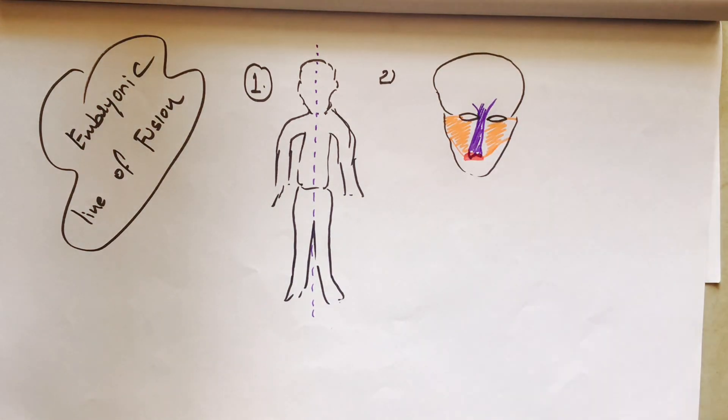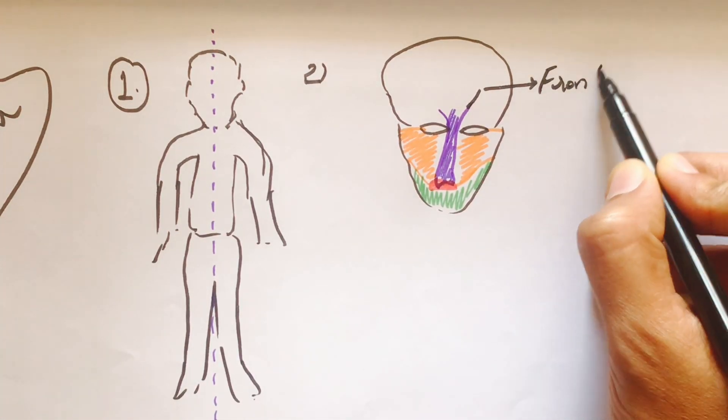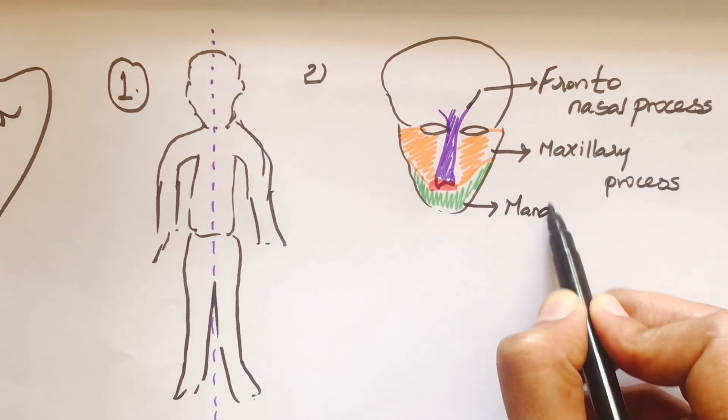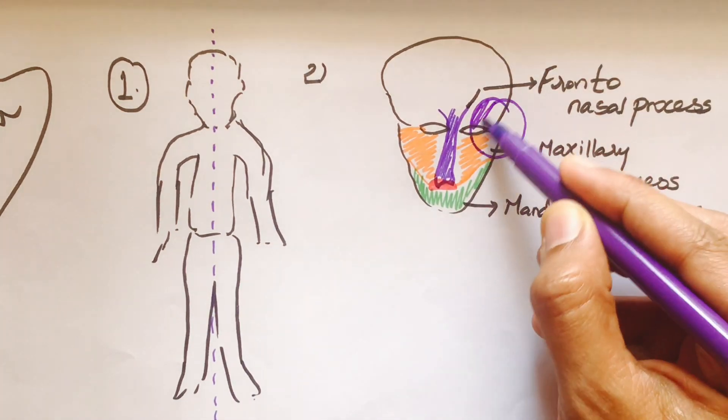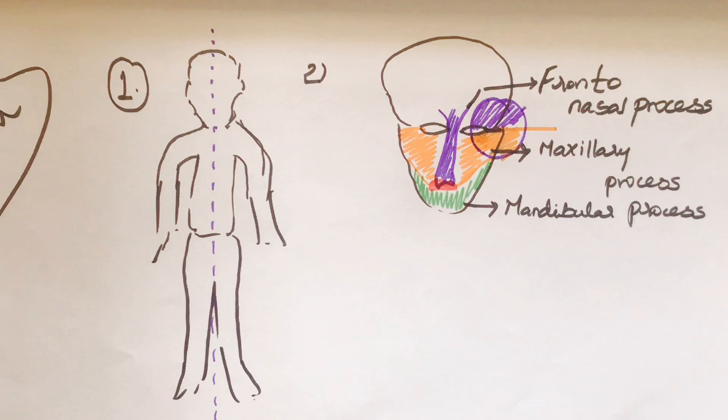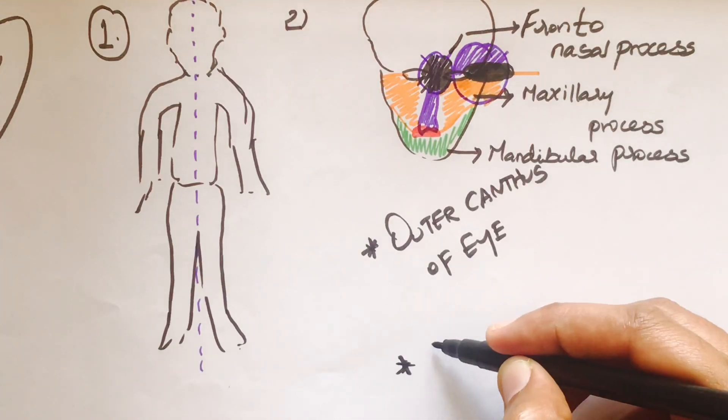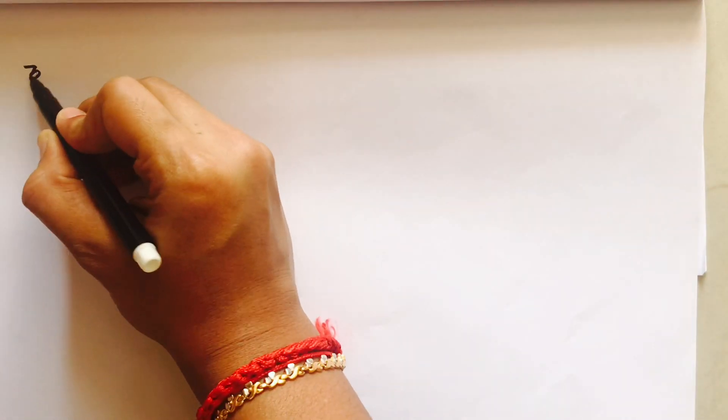The face develops from five processes: frontonasal process, maxillary process, and mandibular process—two maxillary, two mandibular, and one frontonasal. Where the frontonasal and maxillary processes meet is the embryonic line of fusion, where dermoid cysts are most common.